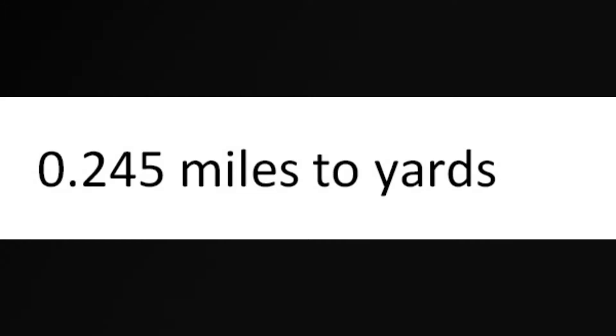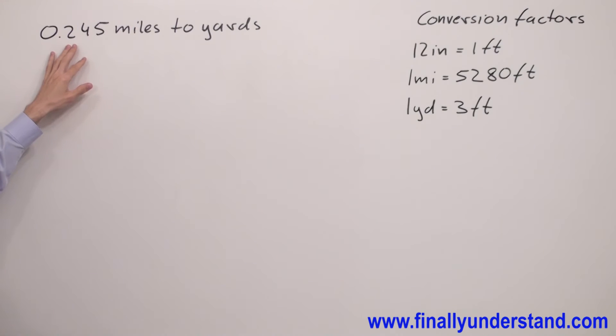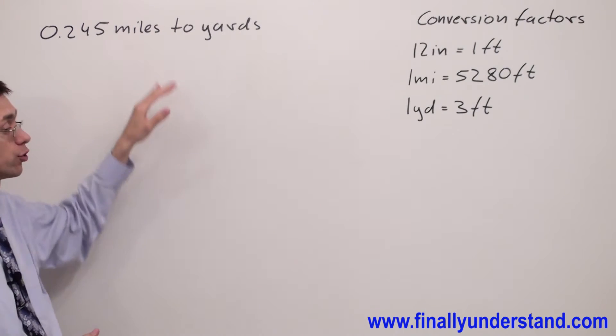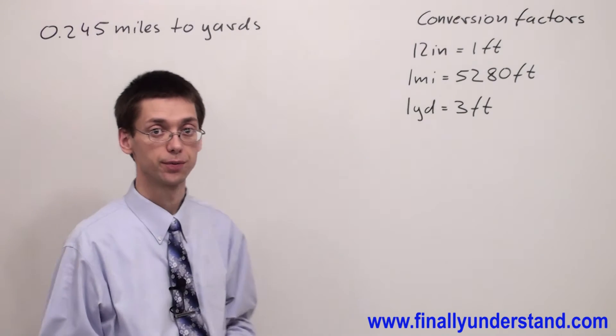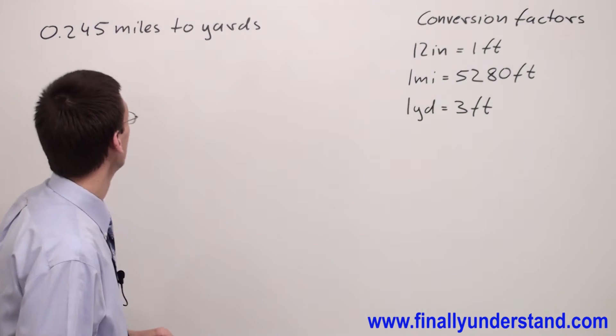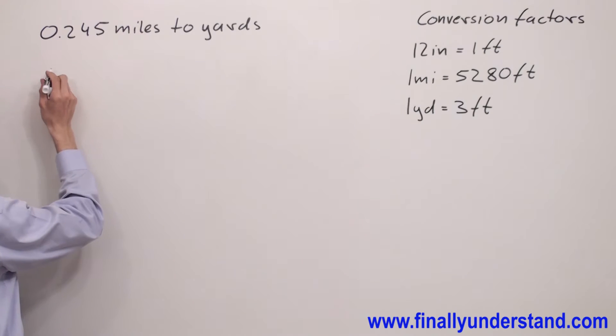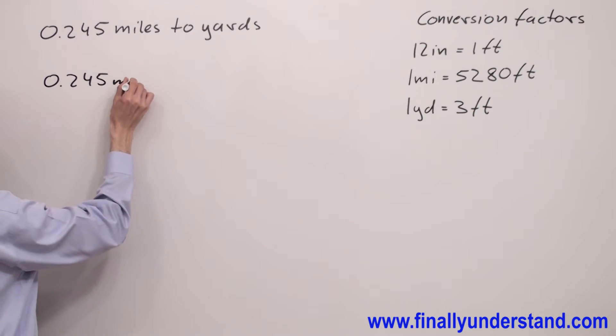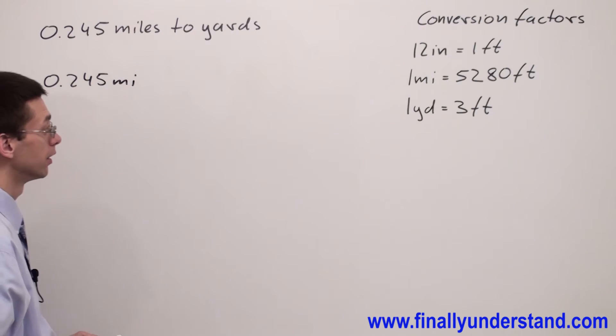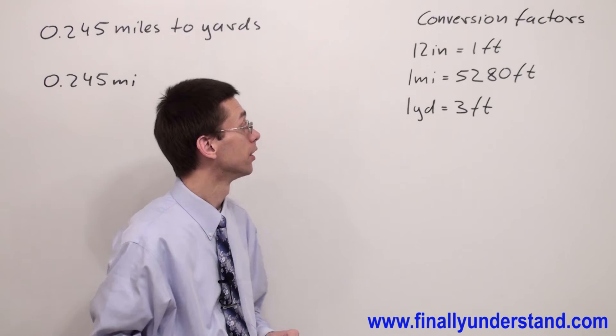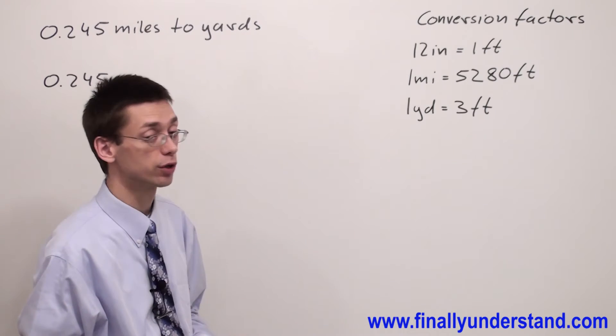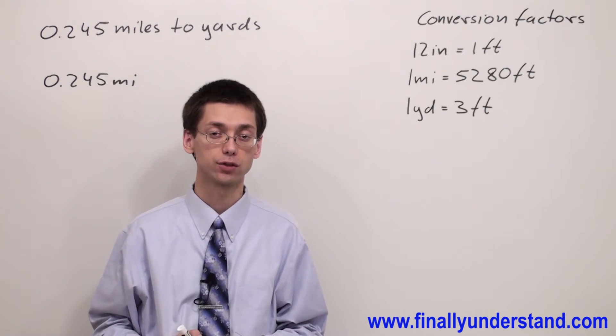Let's take a look at this example. This time we're supposed to convert 0.245 miles to yards. So I'm going to copy down the distance which is 0.245 miles. I have to convert miles to yards. Let's say I do not have a conversion factor which will go straight from miles to yards.